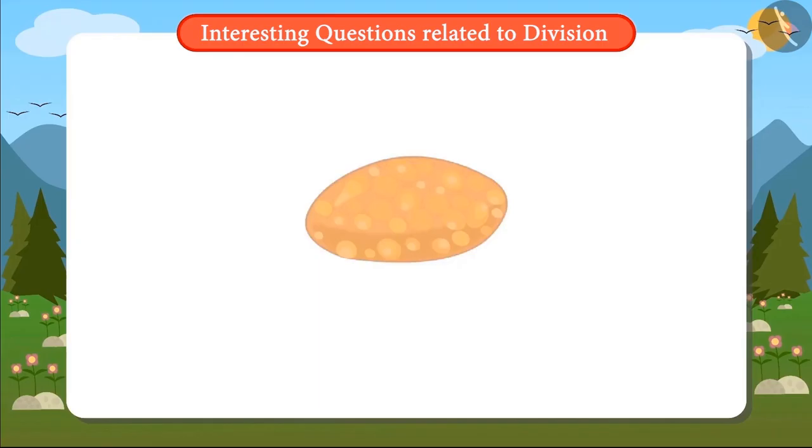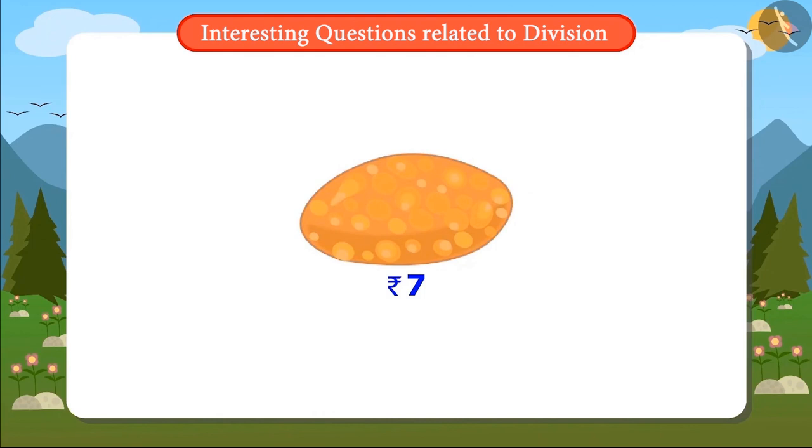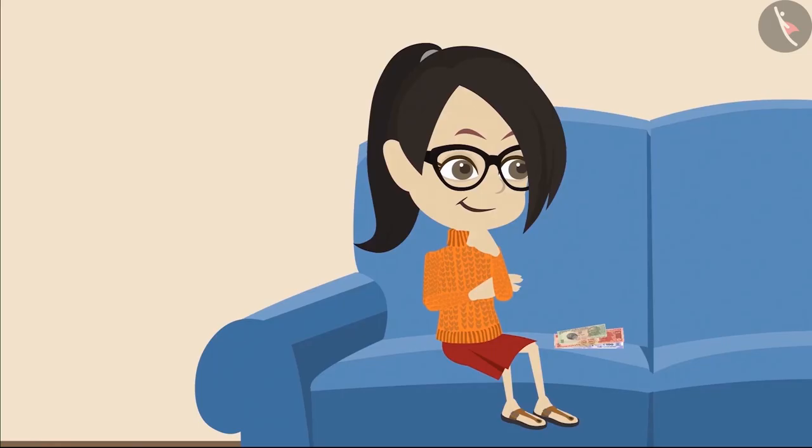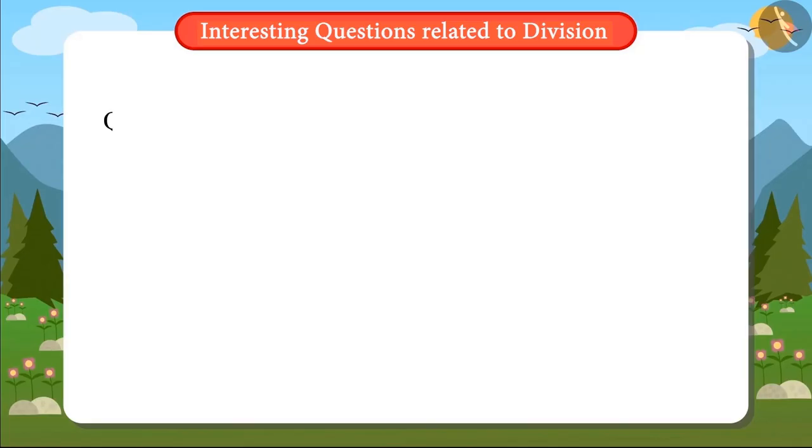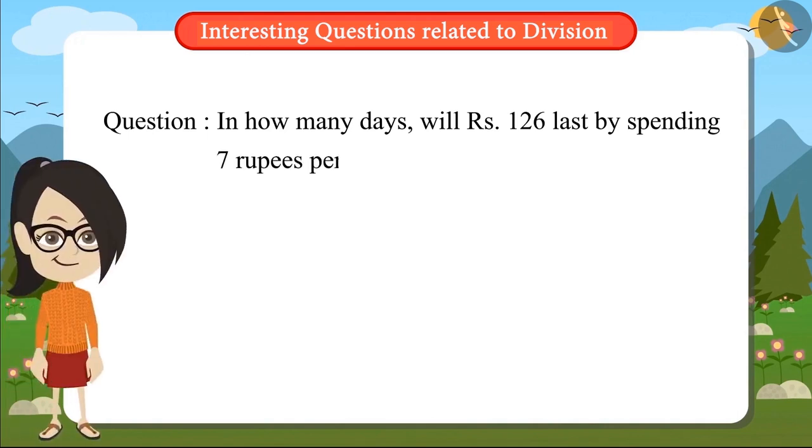From my school canteen, I buy one kachauri each for 7 rupees. So like this, every day I spend 7 rupees. Vandana now has to find out in how many days she will be able to spend 126 rupees by spending 7 rupees per day. Can you help Vandana find this out?